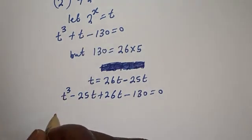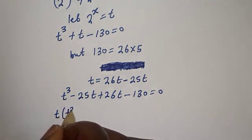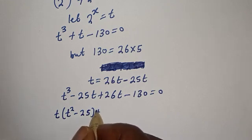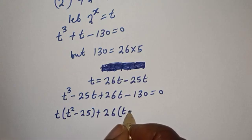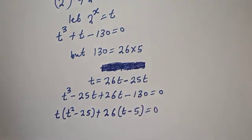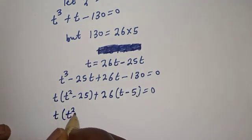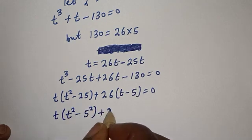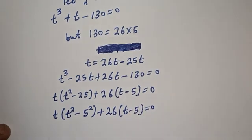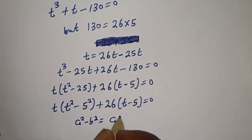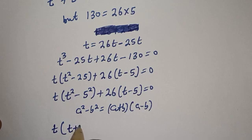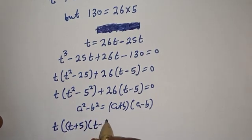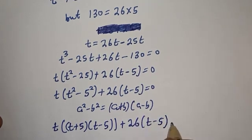Here, t is common. We can factor t out: t bracket (t squared minus 25) plus 26t minus 5 is equal to zero. Then this becomes t bracket (t squared minus 5 squared) plus 26t bracket (t minus 5) is equal to zero. Using the difference of squares — a squared minus b squared equals (a plus b)(a minus b) — we get: t bracket (t minus 5)(t plus 5) plus 26t bracket (t minus 5) is equal to zero.